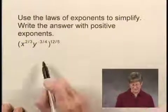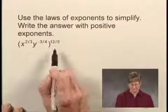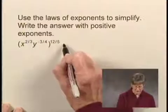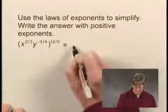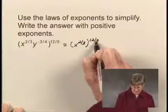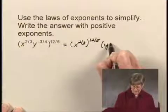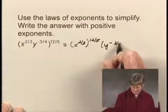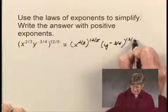We have a law of exponents that says when we raise a product to a power, we raise each factor to the power. So let's do that first. This is going to be x to the 2/3 raised to the 12/5 power, times y to the negative 3/4 raised to the 12/5 power.